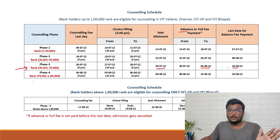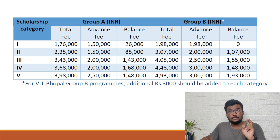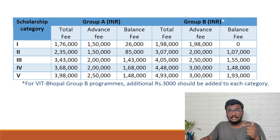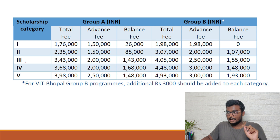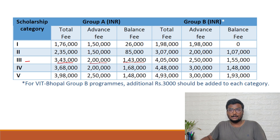VIT has divided its programs into Group A and Group B, and fees differ between them. For example, if you got Biotechnology under Category 3 at VIT Vellore — that falls under Group A — the total fee is 3 lakhs 43,000 rupees. The advance fee to be paid before 4th August is 2 lakhs, and the balance fee of 1 lakh 43,000 must be paid before 18th August.